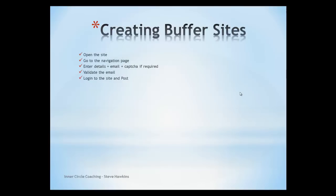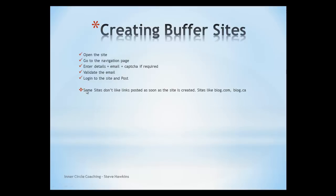To create buffer sites, we basically go to the site itself, navigate to the sign up page or the create account page, enter our details and emails, and complete any CAPTCHA if needed. It's important to remember that we need to add a valid email so we can validate via the email that the site sends out before we can post. Then we log into the site and post our article containing our links. We then go and promote the article using comments, weekly links, whatever tools we've got, and that boosts the link back to our main money site.